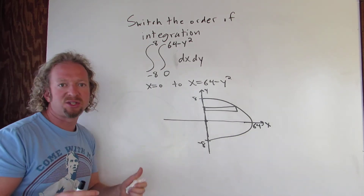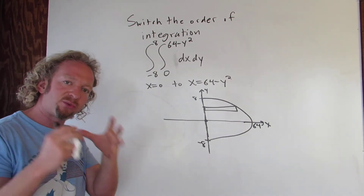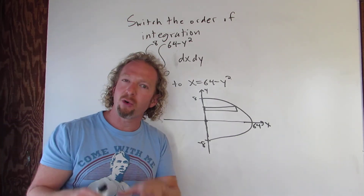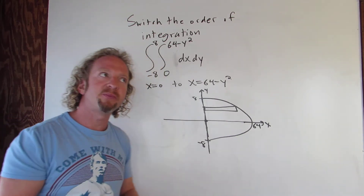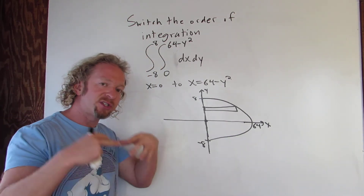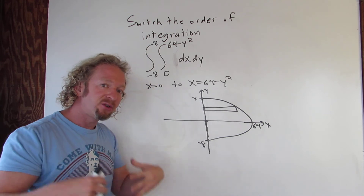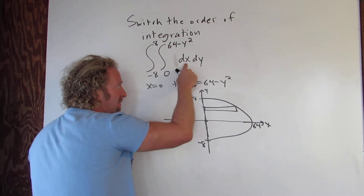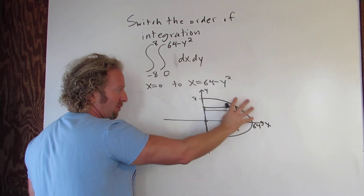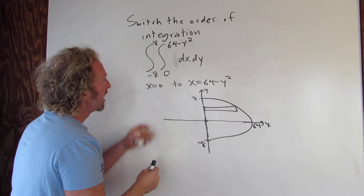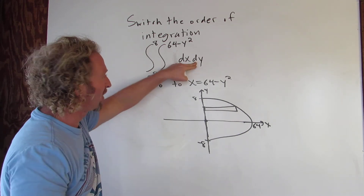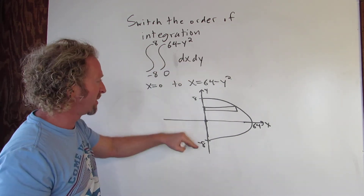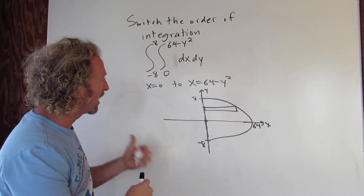Here's an easy trick: if you have functions of y, you have horizontal rectangles; if you have functions of x, you have vertical rectangles. So you see x, but x is a function of y, giving a horizontal rectangle. Then we integrate with respect to y from negative 8 to 8.